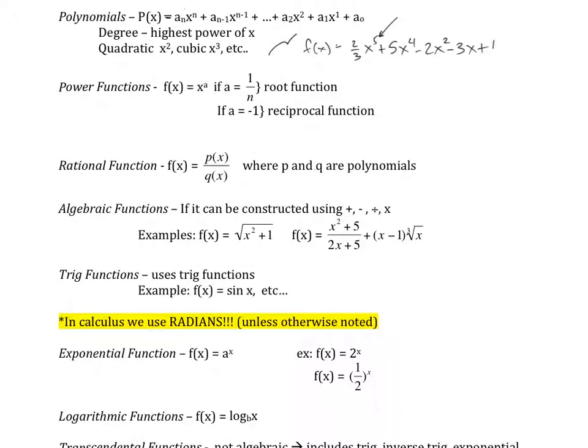Algebraic functions, if it can be constructed using a plus, a minus, division, multiplication, then we can call it an algebraic function. So here's our example. We've got f of x equaling the square root of x squared plus one, f of x equaling x squared plus five over 2x plus five plus the quantity x minus one times the cube root of x. So those are algebraic functions because I've expressed them using addition, subtraction.